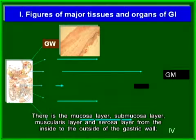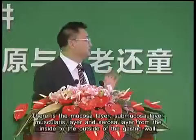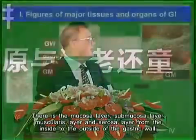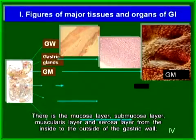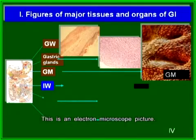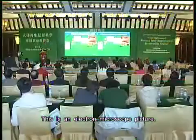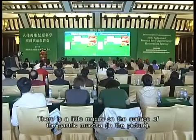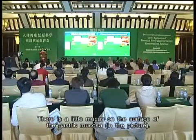From the inside to the outside of the gastric wall, there is the mucosa layer, submucosa layer, muscularis layer, and serosa layer. The gastric mucosa looks like packed stones in this electron microscope picture. There is a little mucus on the surface of the gastric mucosa.